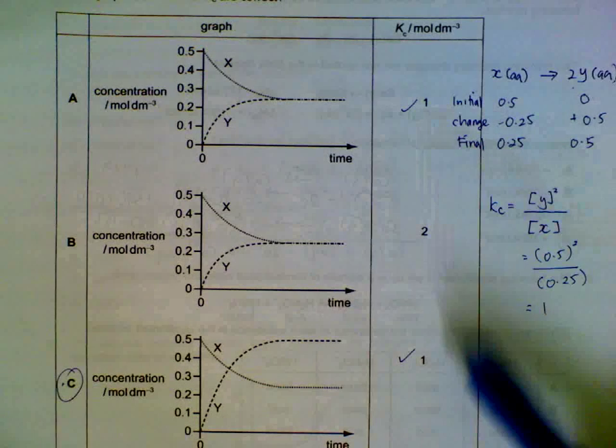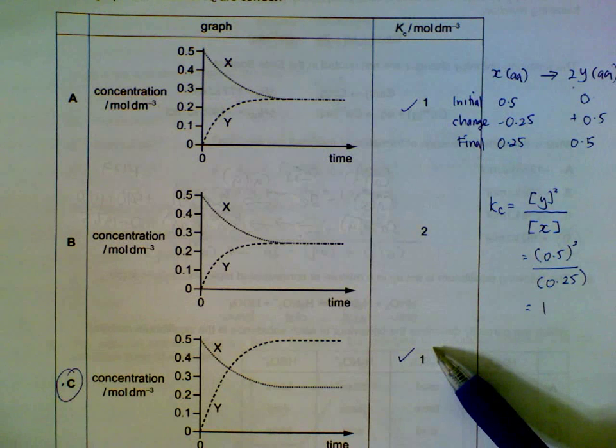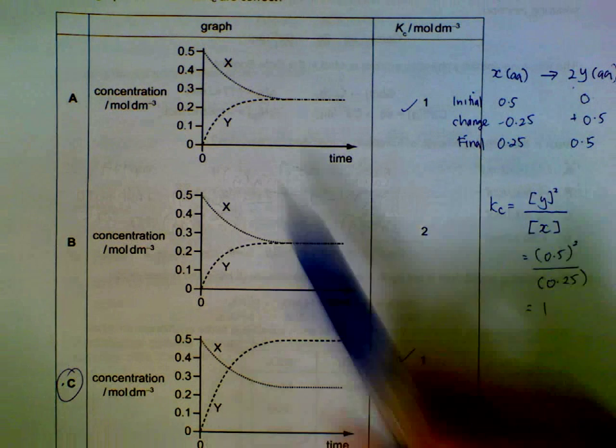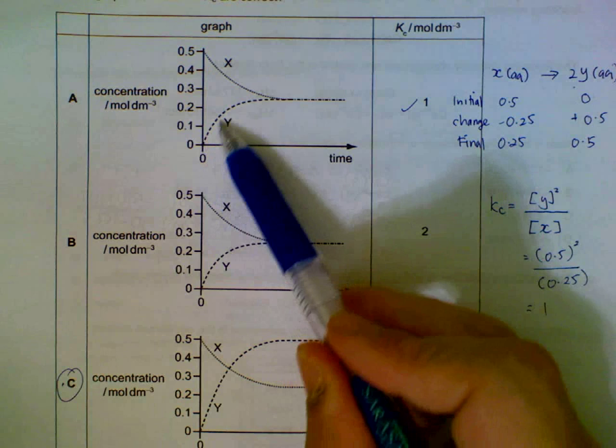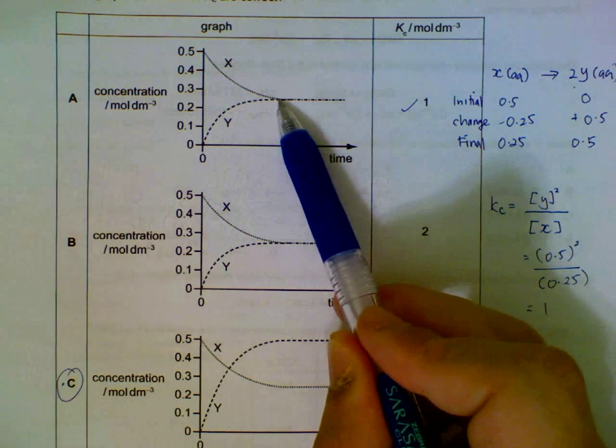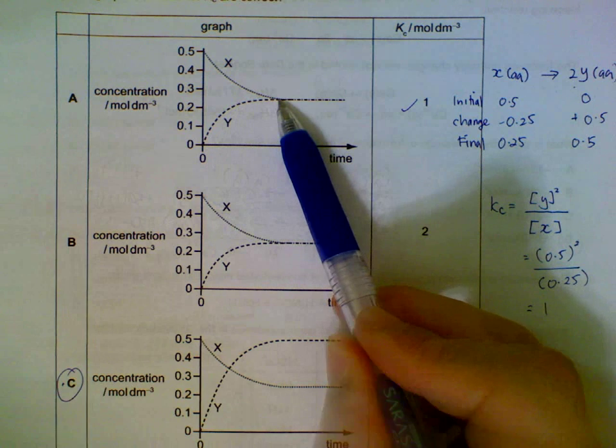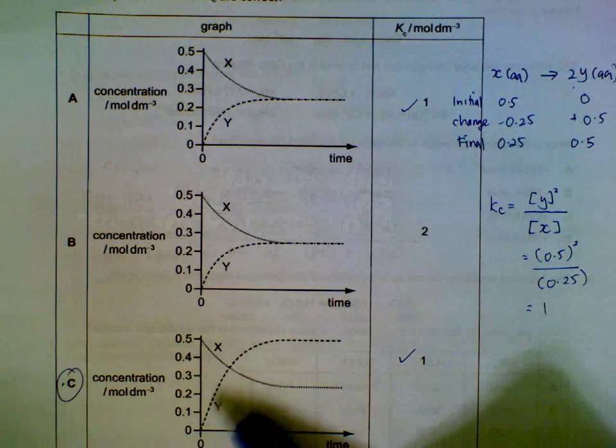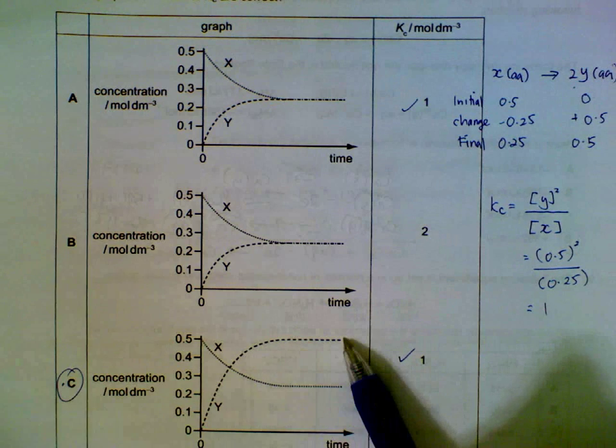And then it could be a or c, based on the Kc value. We check the amount for y. For a, the equilibrium amount is only 0.25, we want it to be 0.5, which is shown in c.